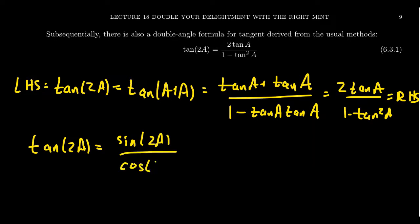If you can compute sine of 2a and cosine of 2a, you can get tangent, you can get all the other identities as well.